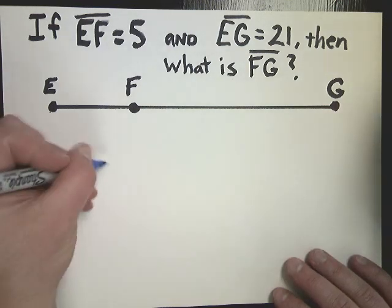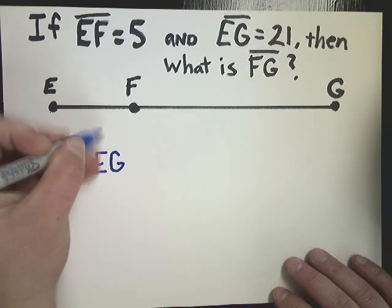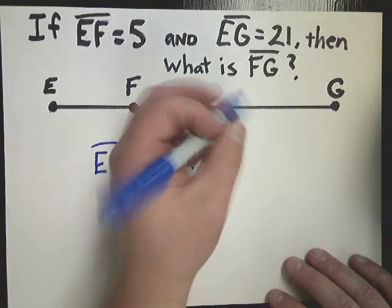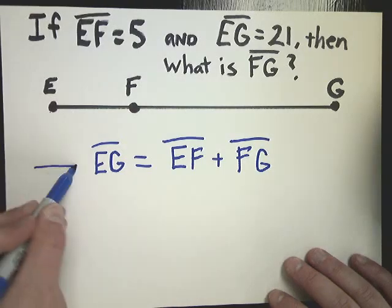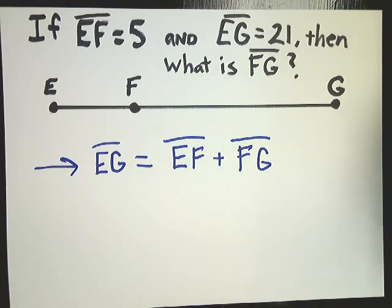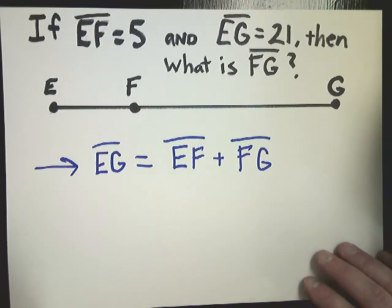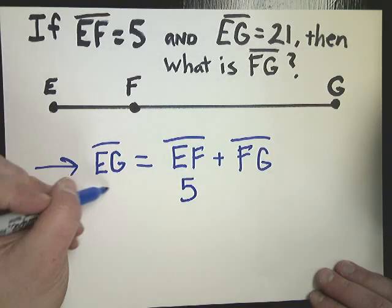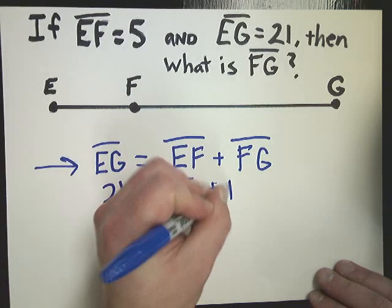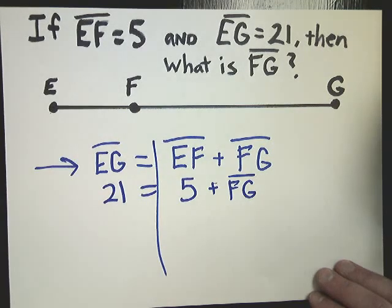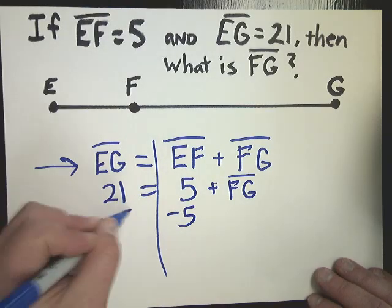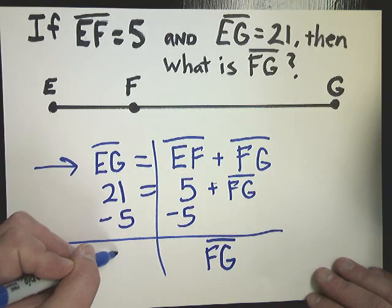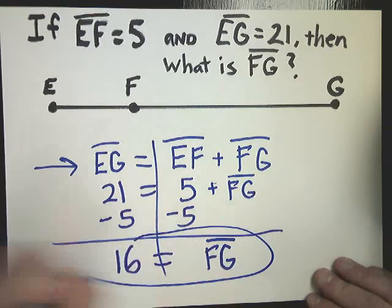So I'm going to say that the big segment EG is equal to EF plus FG. If you do this one step, everything else becomes much easier because you can solve equations when you have to or just plug things in. In this one it's even simpler than it would seem. So EF is equal to 5, EG is 21. Once you have the numbers, you can just plug them in beneath and then you just solve it like an equation. To get rid of plus 5, I need to subtract 5. Segment FG is equal to 16. That's pretty easy, right?